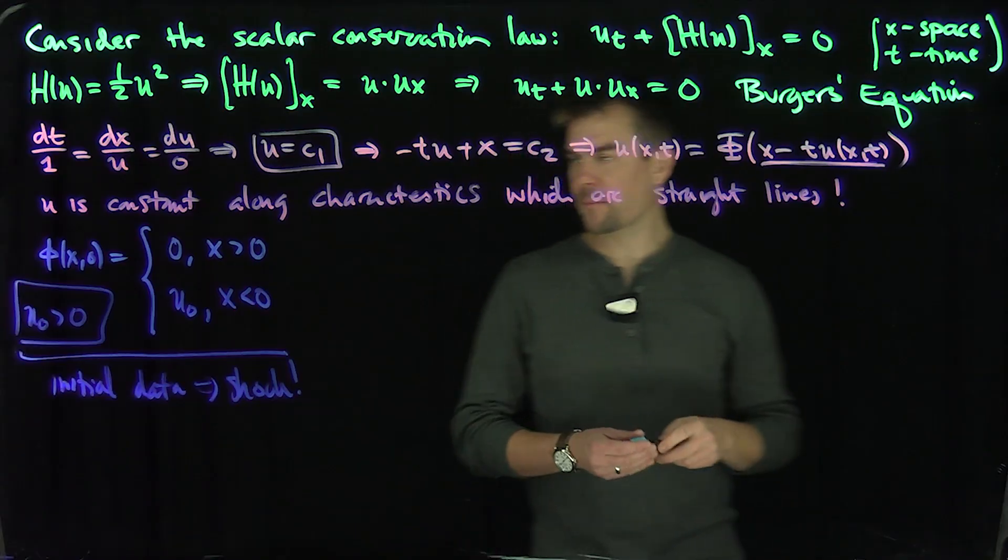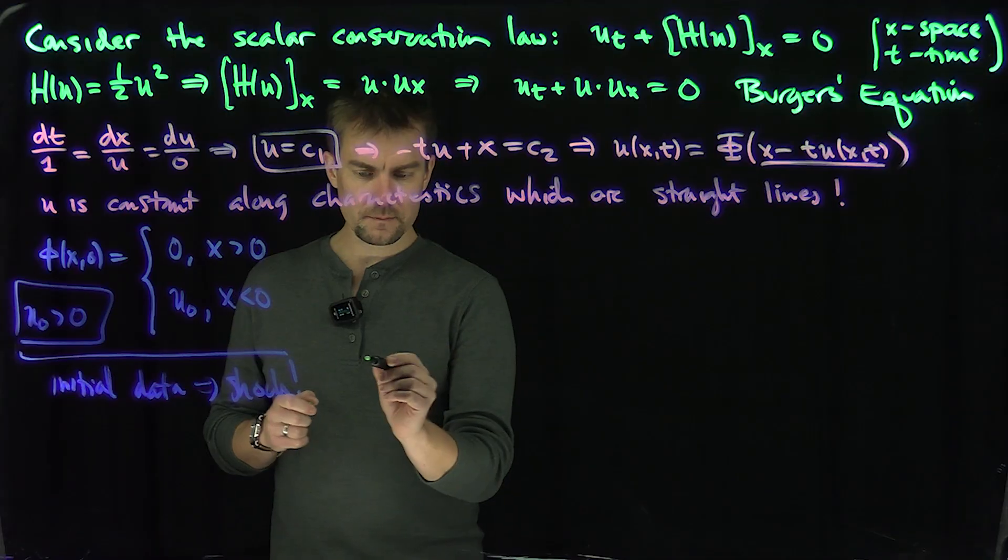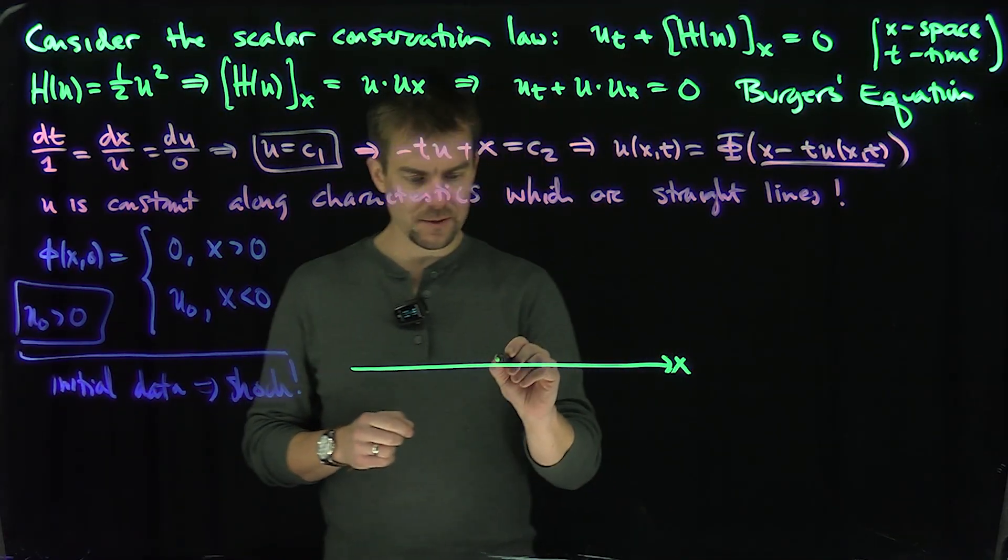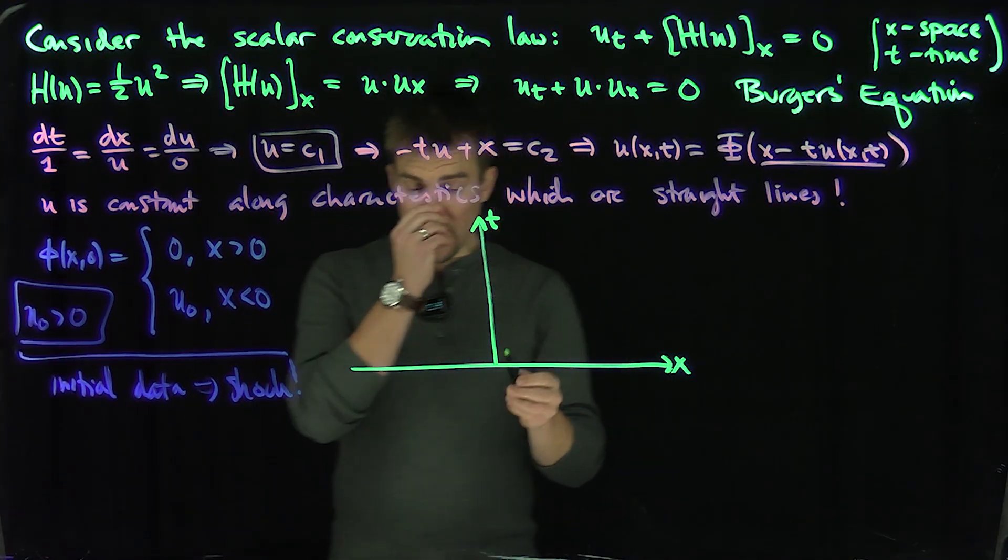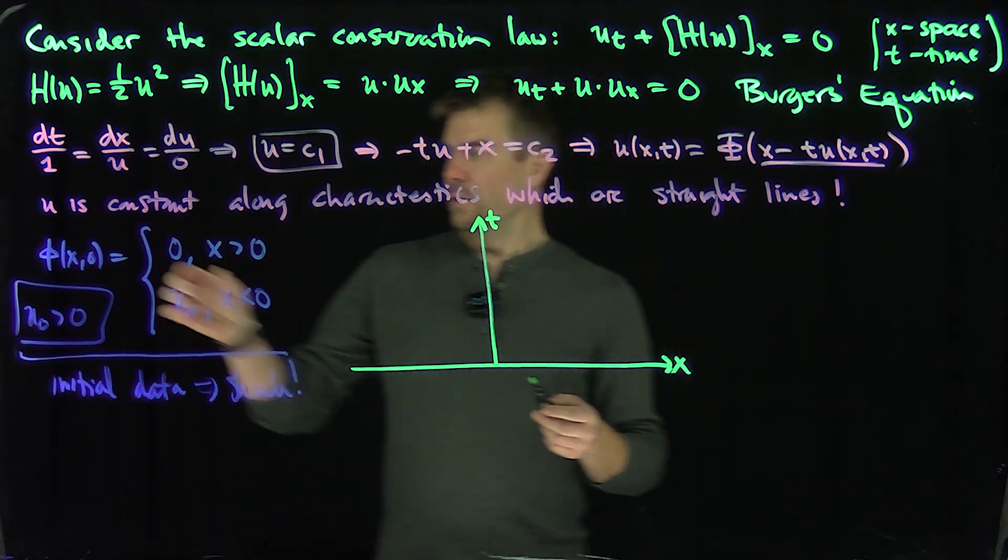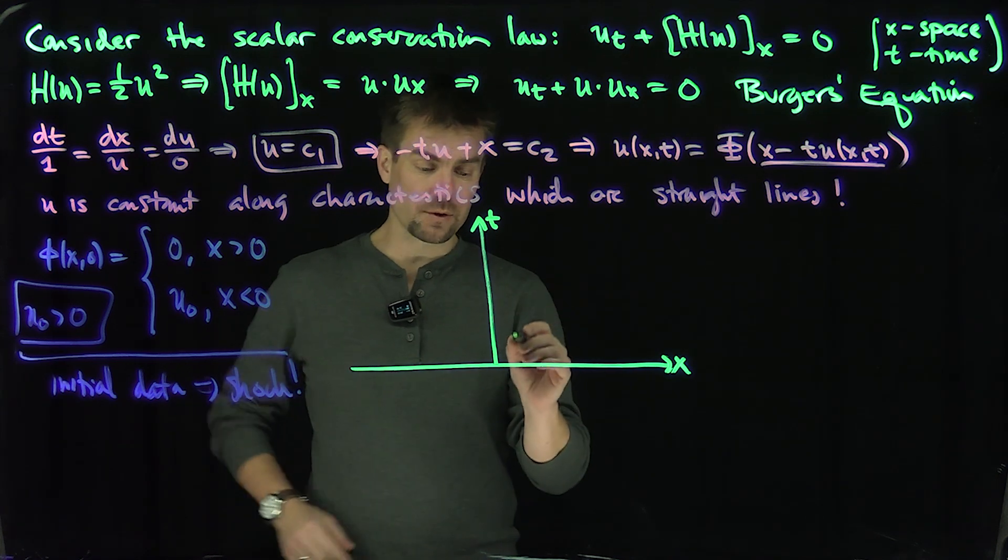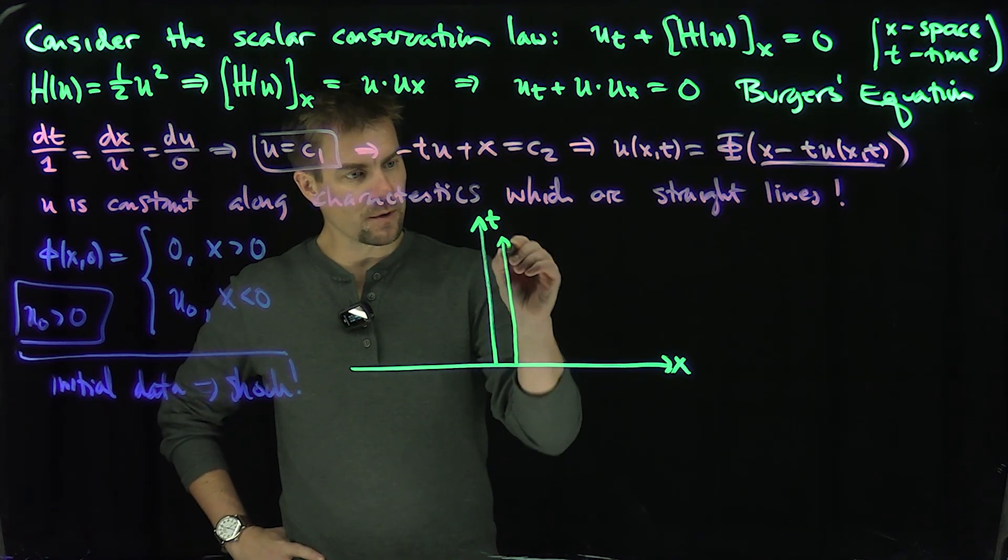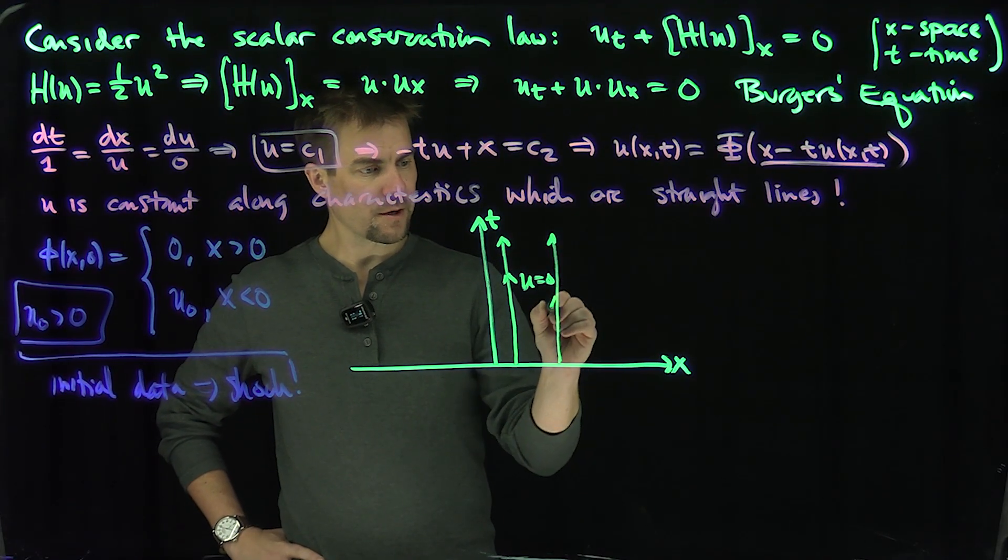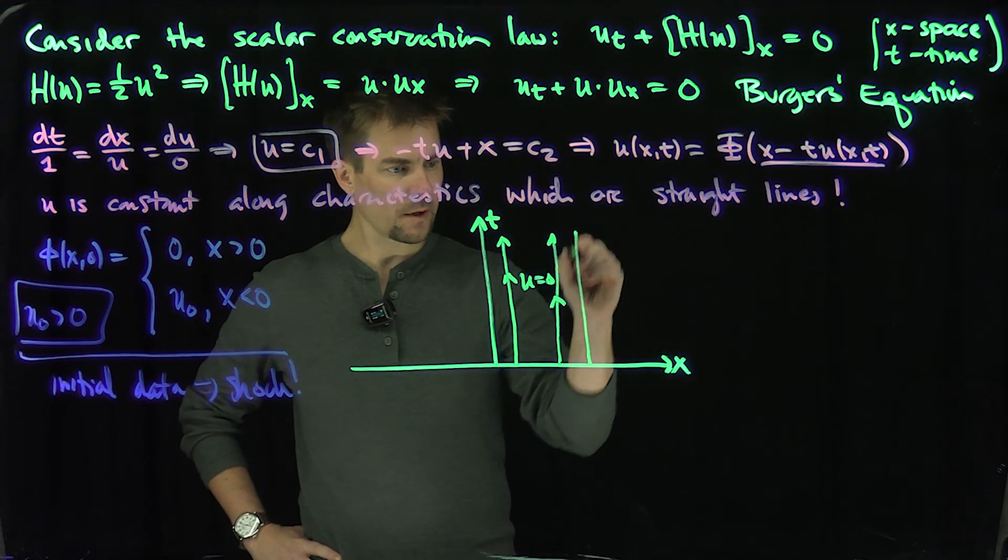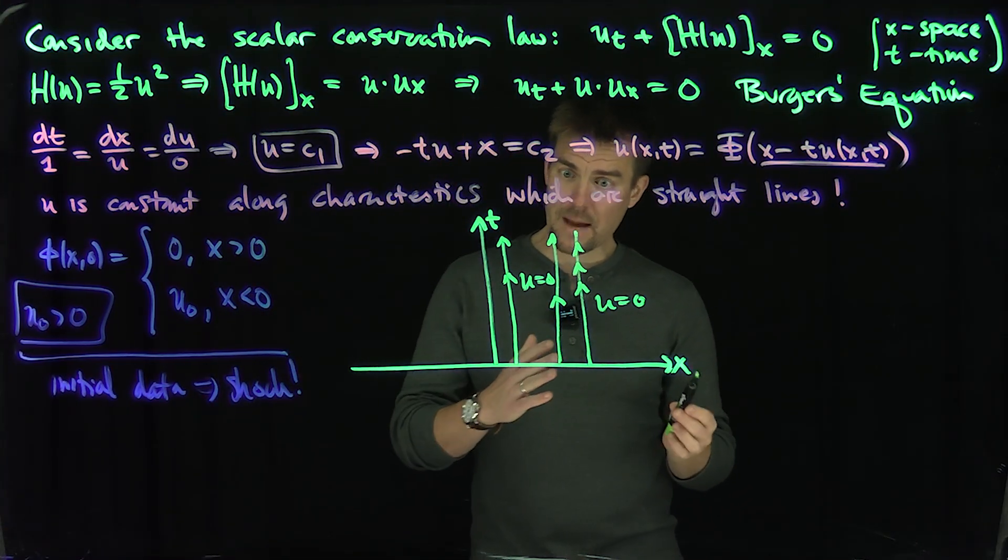And this initial data is going to generate a shock. Let's see how that initially generates a shock. Let's draw the picture. Here's the x-axis and here's the t-axis. Now over here, when x is positive, you know that the initial profile is 0. So there's no slope with t relative to x. So you get vertical lines over here. So your characteristics, your u is going up like this, u is equal to 0.